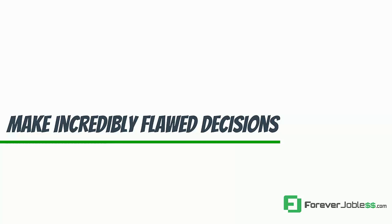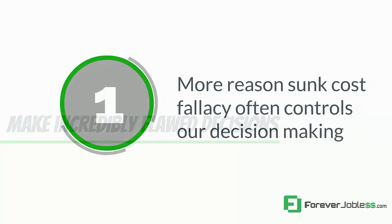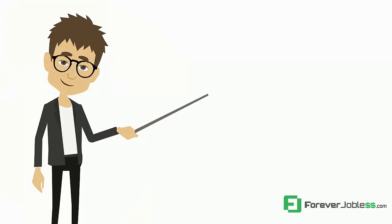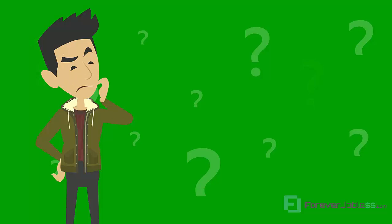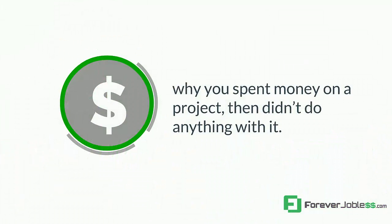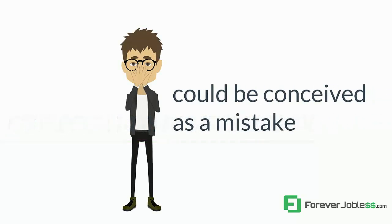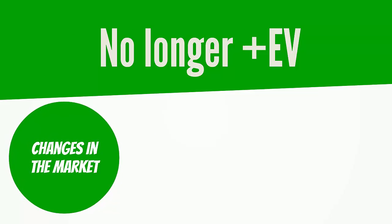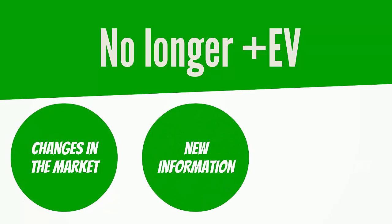At the risk of getting too philosophical, let me bring up one other reason the sunk cost fallacy often controls our decision making. A lot of times we make the irrational decision to succumb to sunk cost bias because subconsciously we may feel the need to justify our decision to irrational people. If someone can't think logically, they won't understand why you spent money on a project then didn't do anything with it. For a logical person, it's illogical to think that's illogical. Most people want to conceal what could be conceived as a mistake. We might not have even made a mistake — it might have been plus EV at the time, but it might no longer be plus EV based on changes in the market or new information we didn't have before.